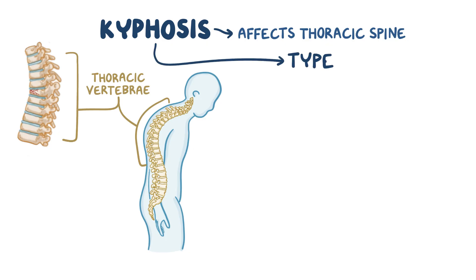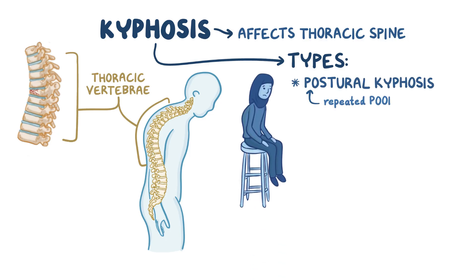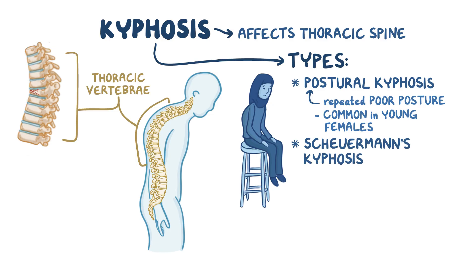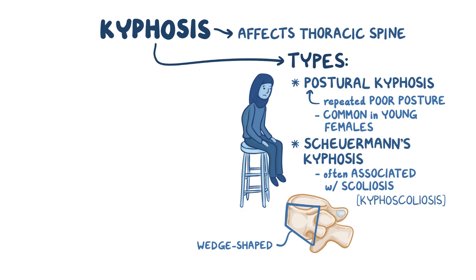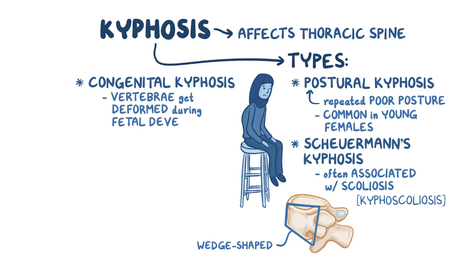There are a few types of kyphosis. First, there's postural kyphosis, which arises from repeated poor posture like slouching for a long time. Postural kyphosis is most common in young females. Second, there's Scheuermann's kyphosis, which is when the vertebrae get structurally deformed and become wedge-shaped for an unclear reason. This is often associated with scoliosis, and it's referred to as kyphoscoliosis. Lastly, there's congenital kyphosis, which develops when the vertebrae get deformed during fetal development, resulting in a baby that's born with kyphosis.